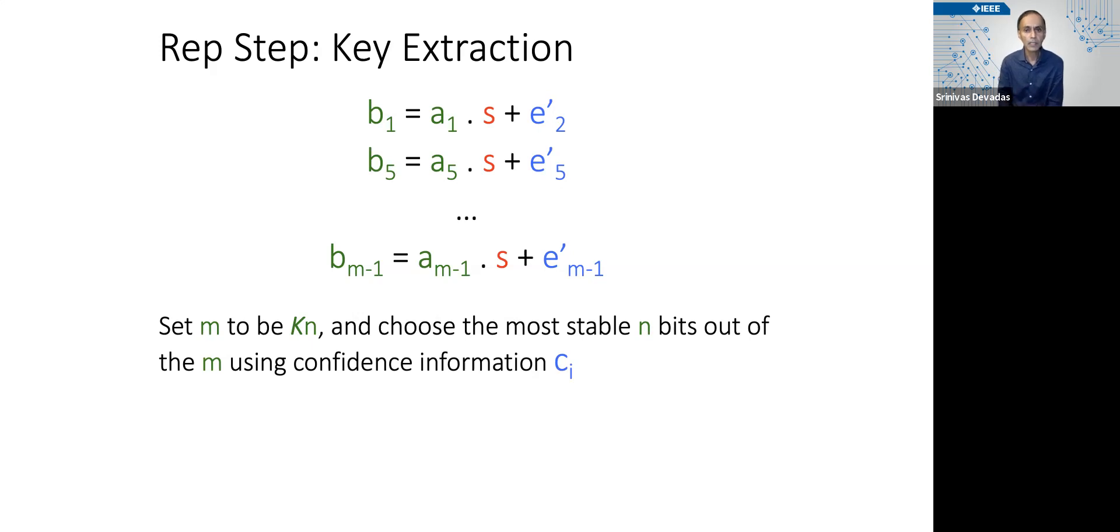We have great confidence that the e₁, e₅, eₘ₋₁ values were exactly the same as what they were in the generate step. And so now we have an error-free system of linear equations that we can solve using Gaussian elimination.